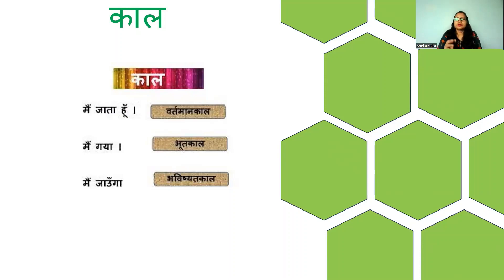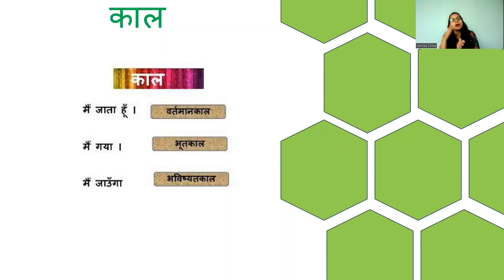So mainly we have three different types of Kaal. This is just for your understanding that three different types are there: present, before — that is Bhoot kaal — and afterwards, which is going to happen, will be Bhavishya kaal. I hope you have understood what is the meaning of Kaal — it is just the time of the action.